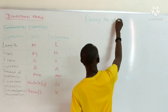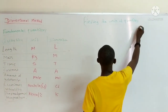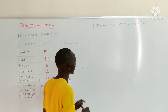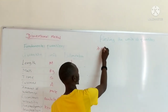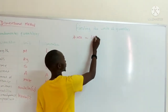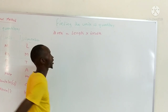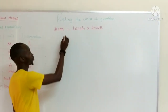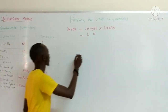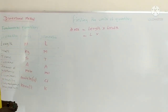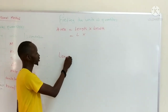Finding the units of quantities. Let's start with the first one: length. We will take the two-dimensional quantity, which is area. Area is the formula length times breadth for either a rectangle or a square. So the dimension of length is L, and we represent it as L times the dimension of breadth. This brings us to an important point: length has many words we can substitute.